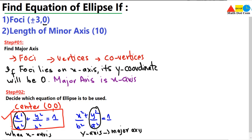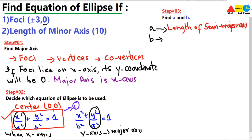In order to use this equation, we need to find the values of a and b. Step number three is to find a and b so we can substitute them into the equation. Here, a is the length of the semi-major axis and b is the length of the semi-minor axis.